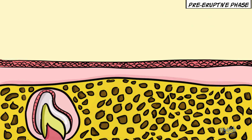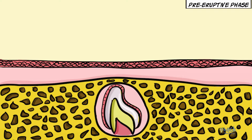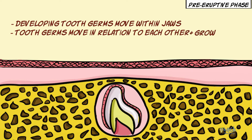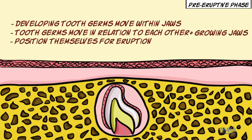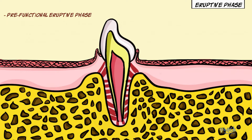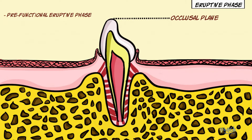The pre-eruptive phase is that phase when the tooth germ moves within the jaws before root formation. The developing tooth germs move in relation to each other and the growing jaws and position themselves for eruption. The eruptive phase, also called the pre-functional eruptive phase, is when the tooth moves in an occlusal direction from its position in the crypt to appear in the oral cavity in functional occlusal position.